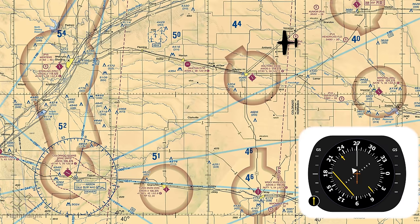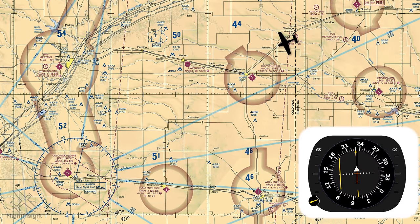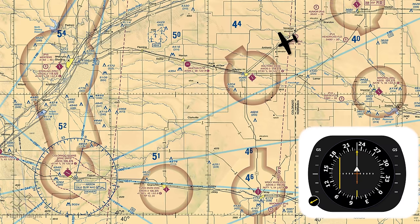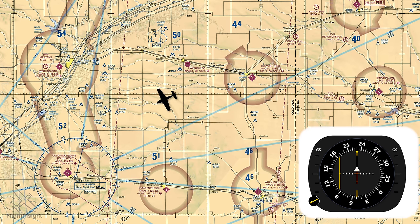Now the indication we get is that the CDI, or needle, is to the left of center. Remember from VORs that we need to chase the needle, so we'll turn left too. But what heading should we turn to? If we turn to our desired course of 230, we've chased the needle by turning left, but all we'll do now is fly parallel to the airway. We won't rejoin it, the needle will stay to the left of center, and we'll never actually pass over the VOR station. No, we'll need to turn more to the left.